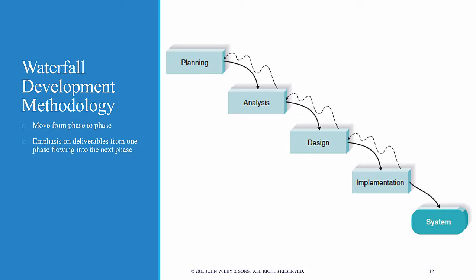The classic approach is the so-called waterfall development methodology. By looking at the chart here, you can probably figure out why it's called waterfall. You move from planning to analysis to design and implementation in a lockstep, waterfall fashion. That is, you complete all of the steps and tasks and provide the deliverables for the prior phase before you cascade down to the next phase, going through all four phases, and then you have the system.